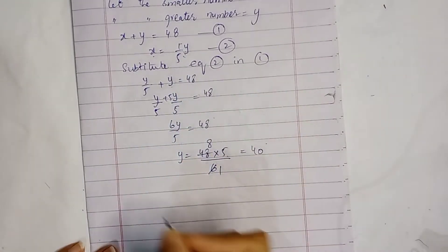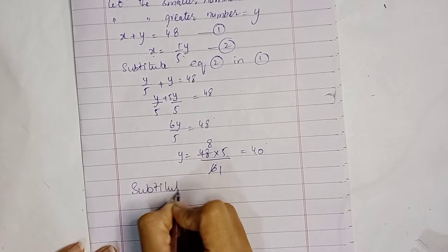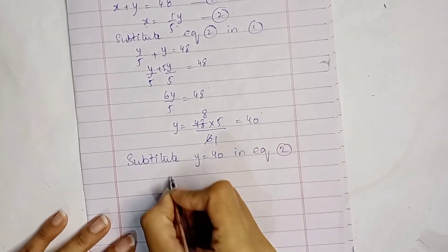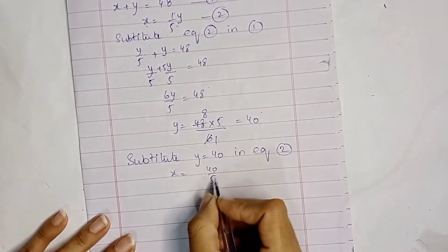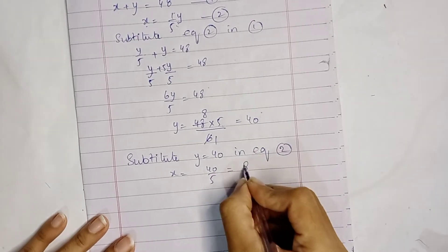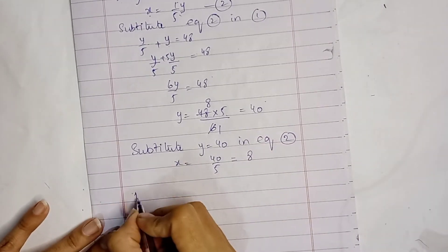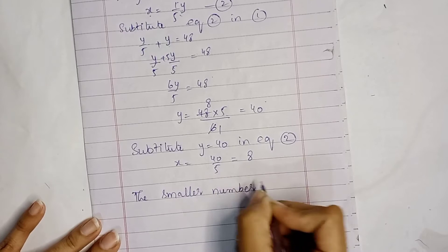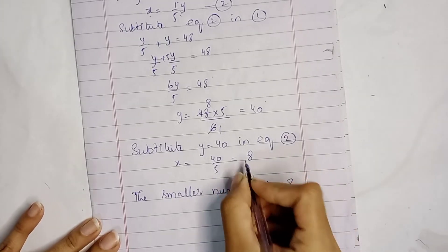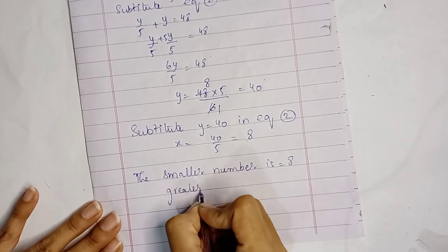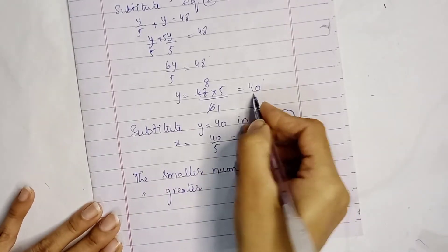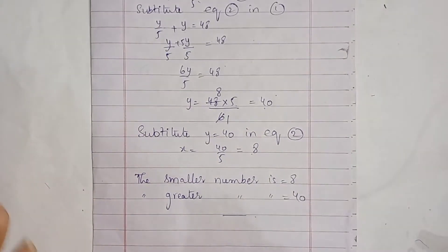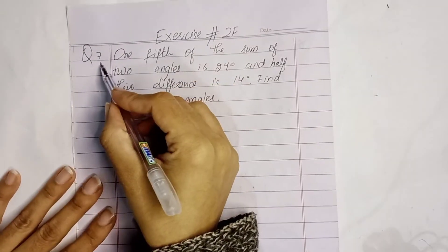y equals 40. In equation 2, x equals 40 over 5, which equals 8. The smaller number is 8 and greater number is 40. Question number 6 is solved.